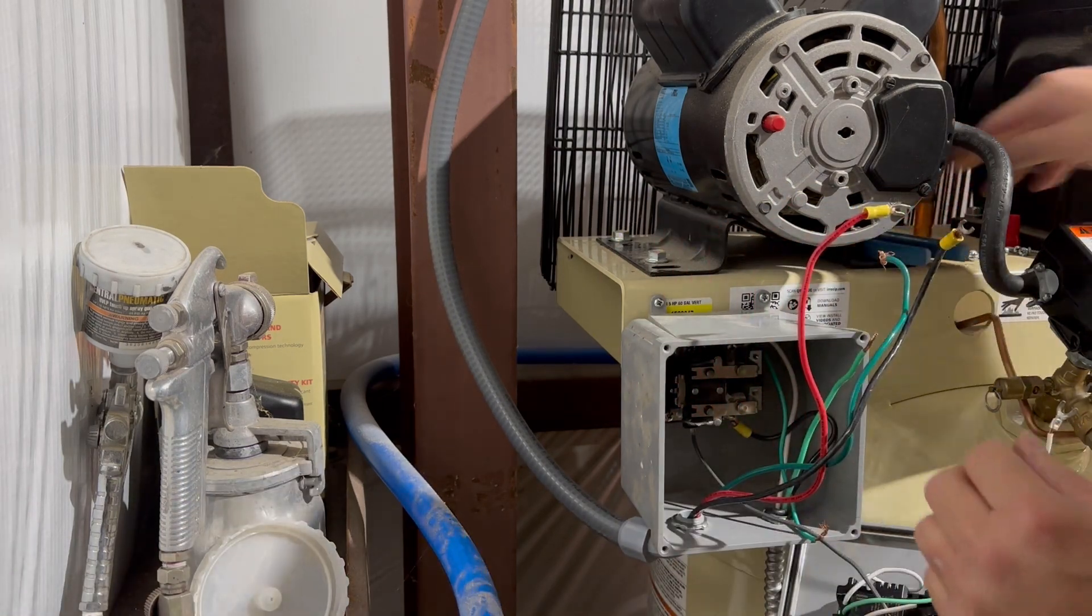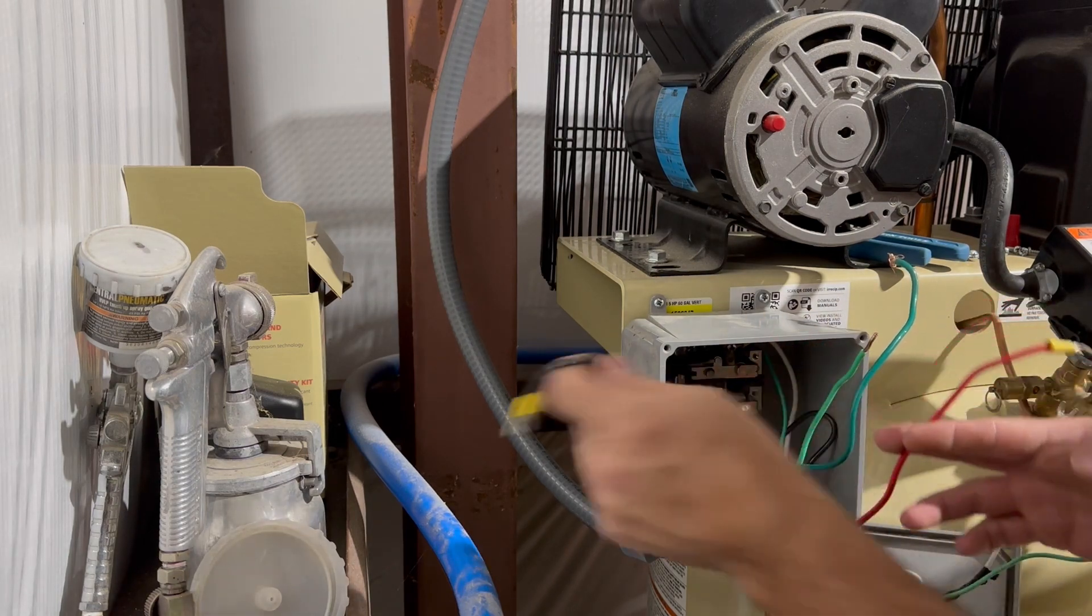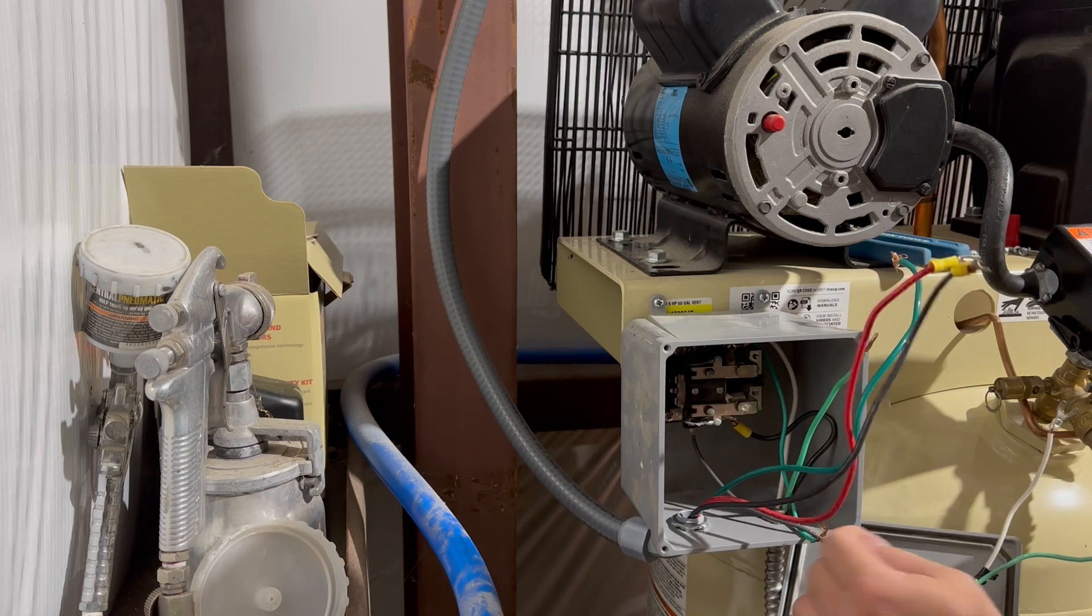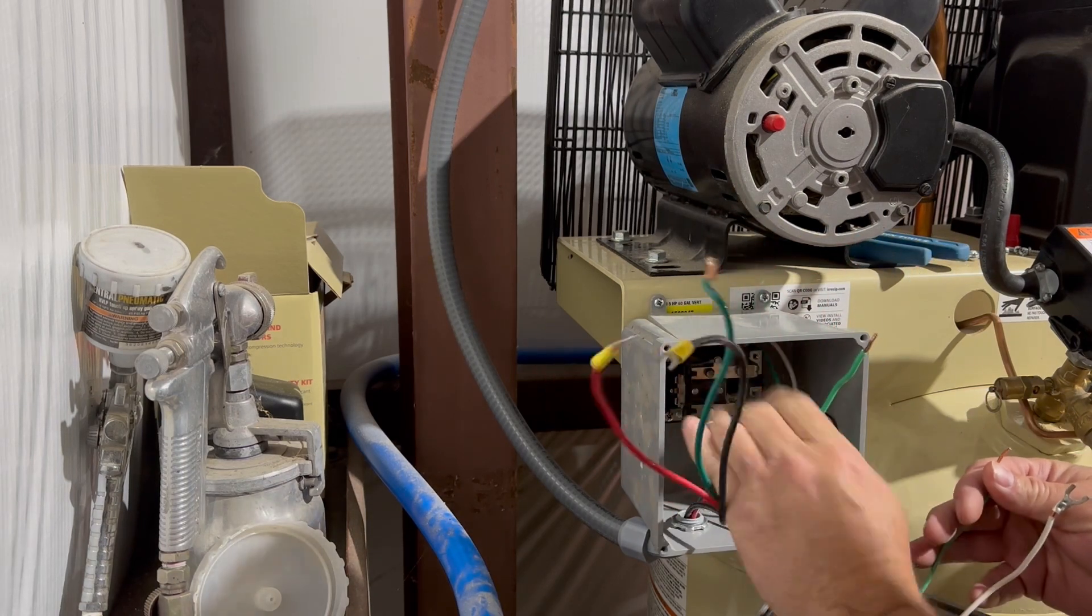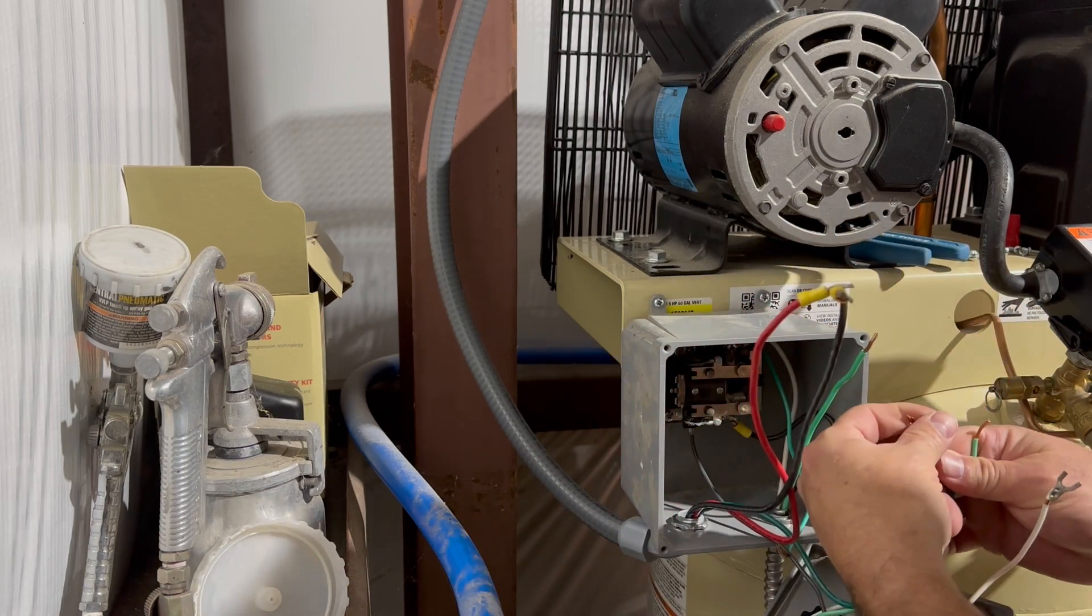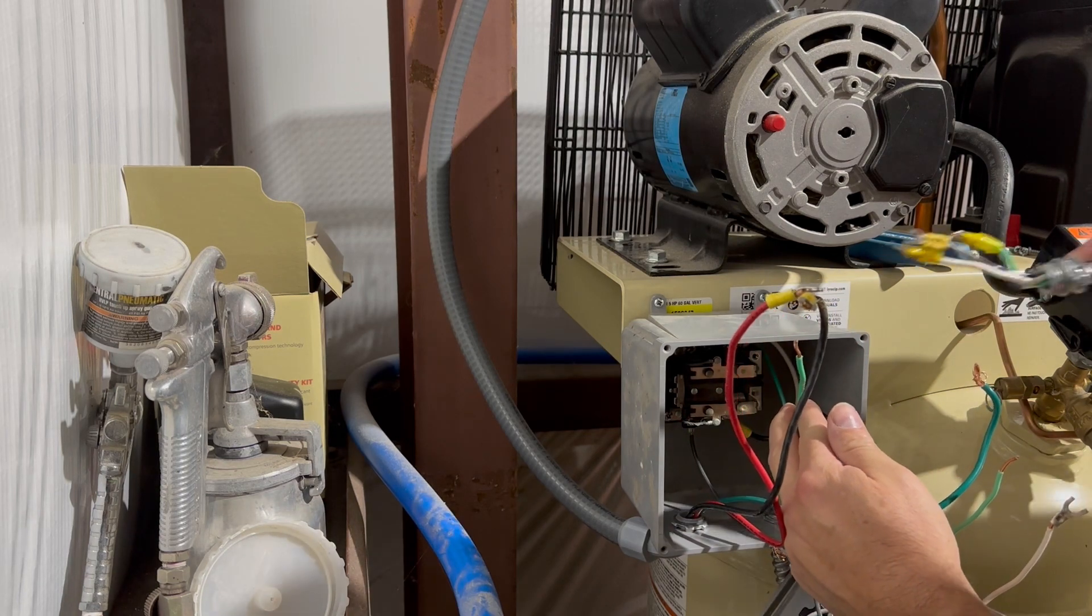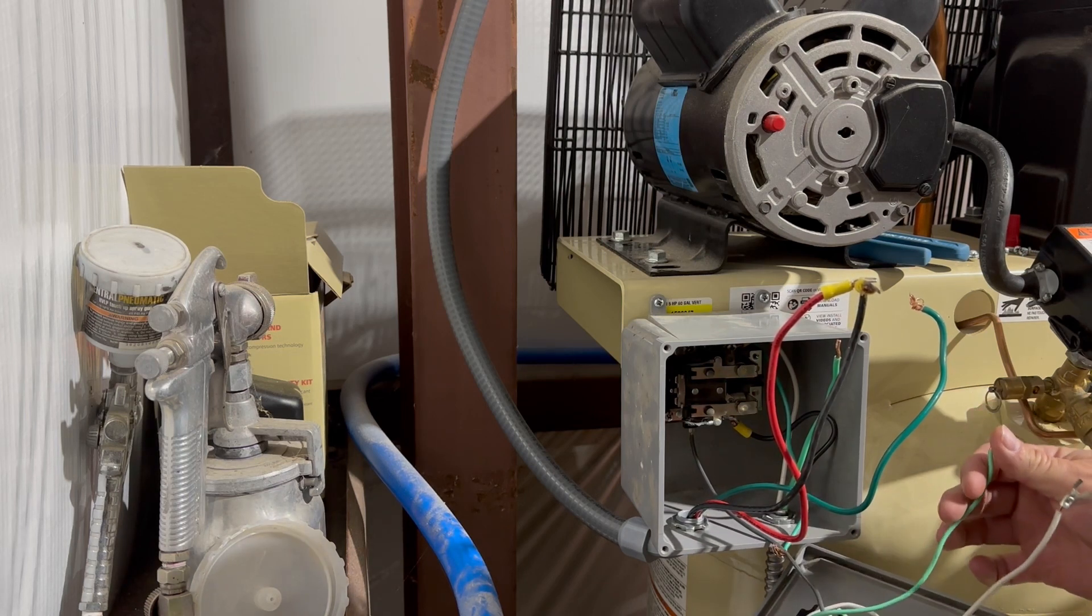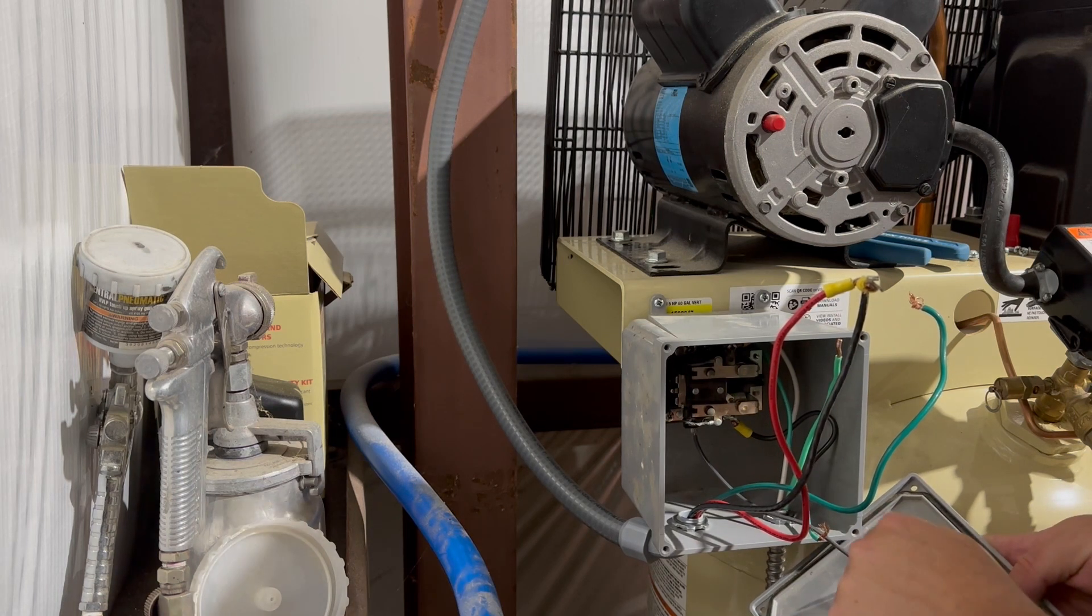All right, so coming from the breaker we've got 220 across these two and our ground. So we're going to hook all the grounds together. We've got our ground coming out, let's go into this wire here that goes to the air compressor. We have the ground that goes to the timer.